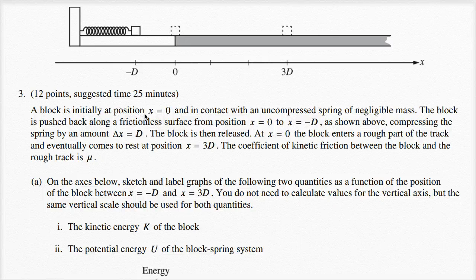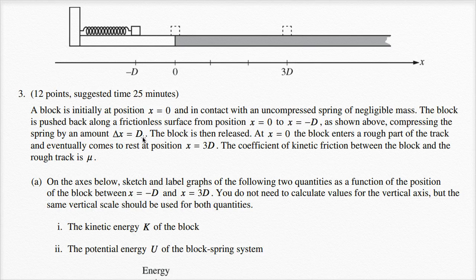A block is initially at position x equals zero and in contact with an uncompressed spring of negligible mass. The block is pushed back along a frictionless surface from position x equals zero to x equals negative d, as shown above, compressing the spring by an amount delta x equals d.